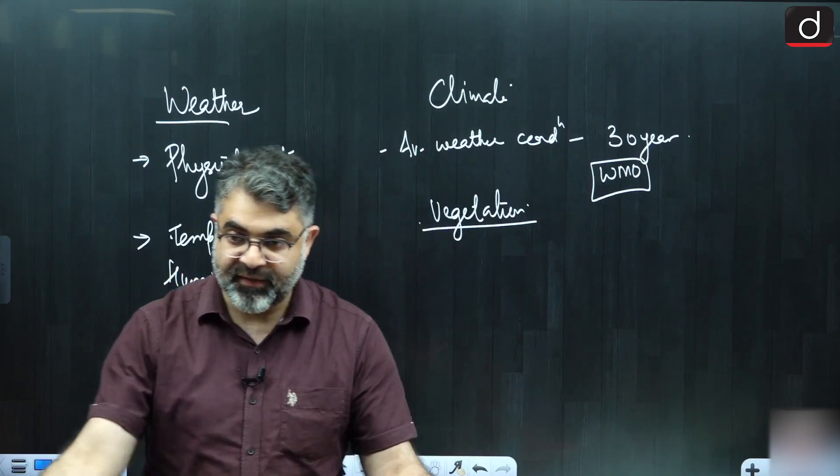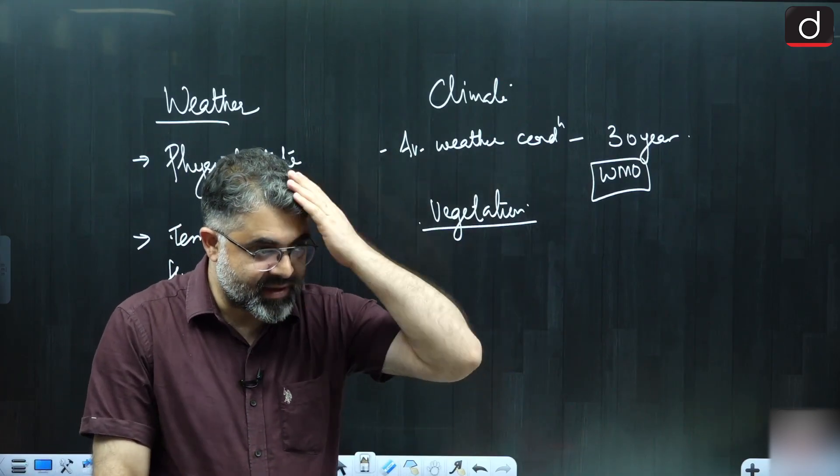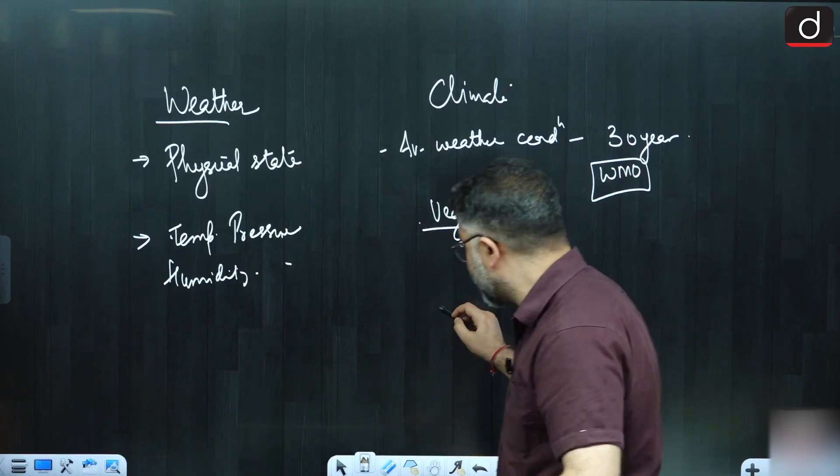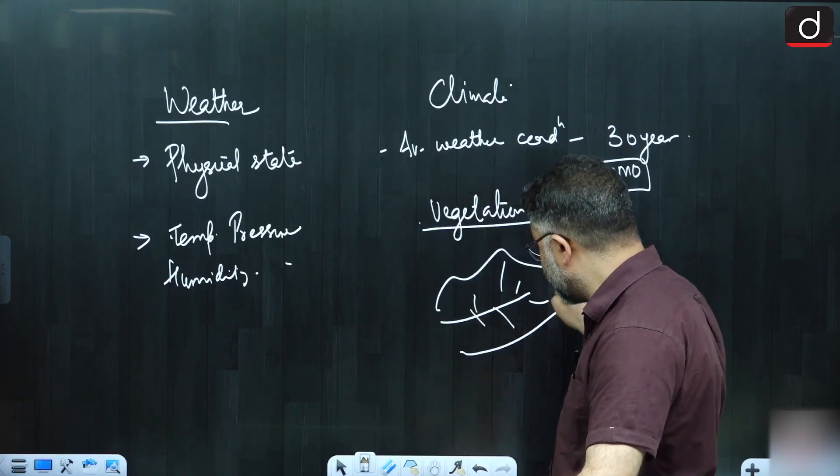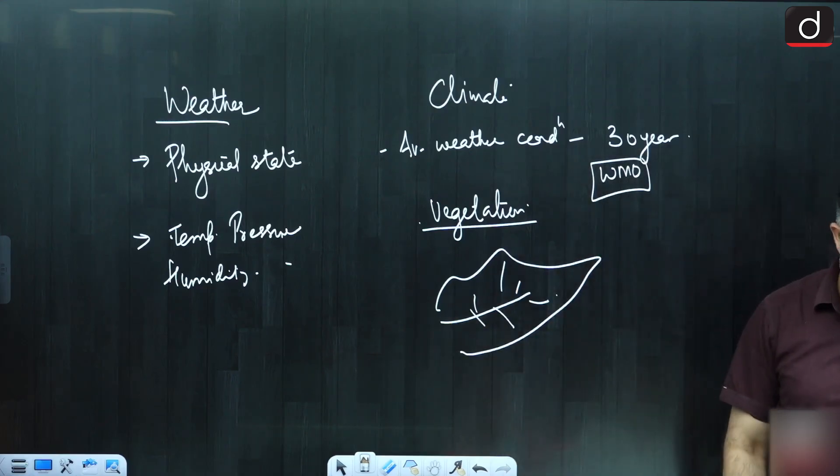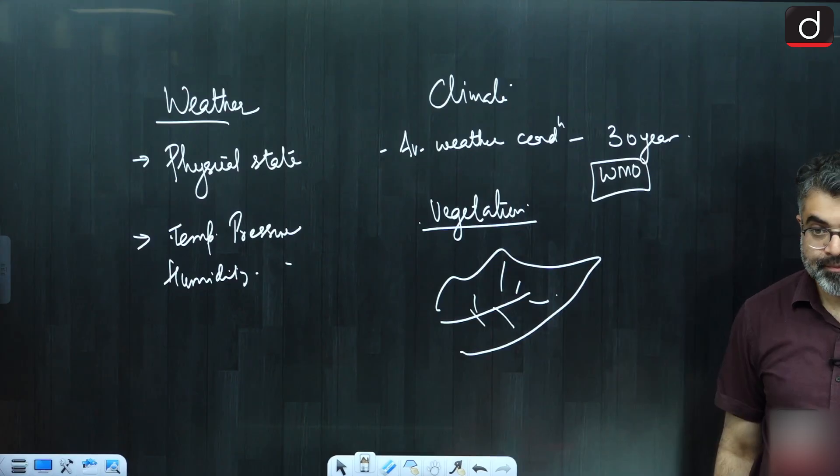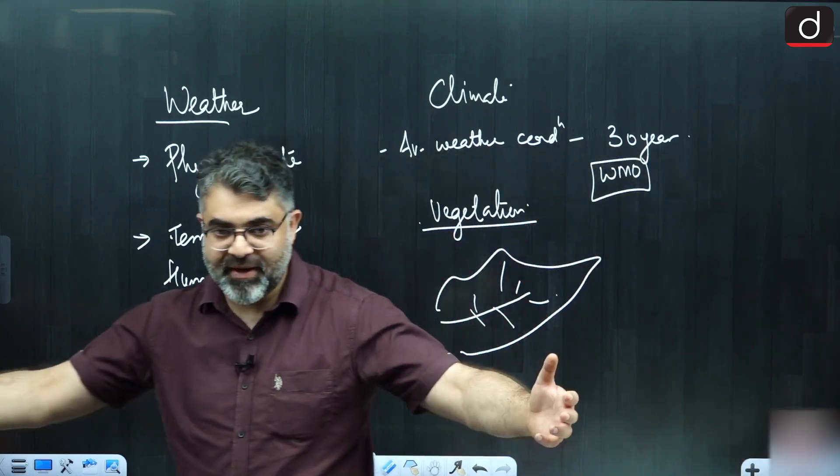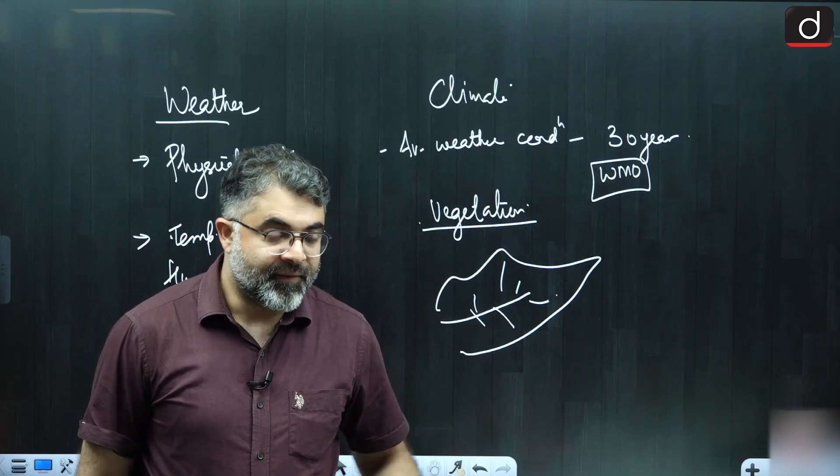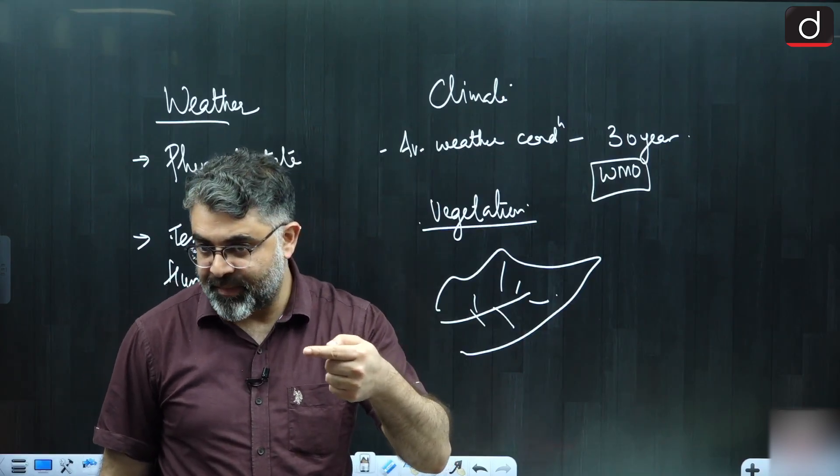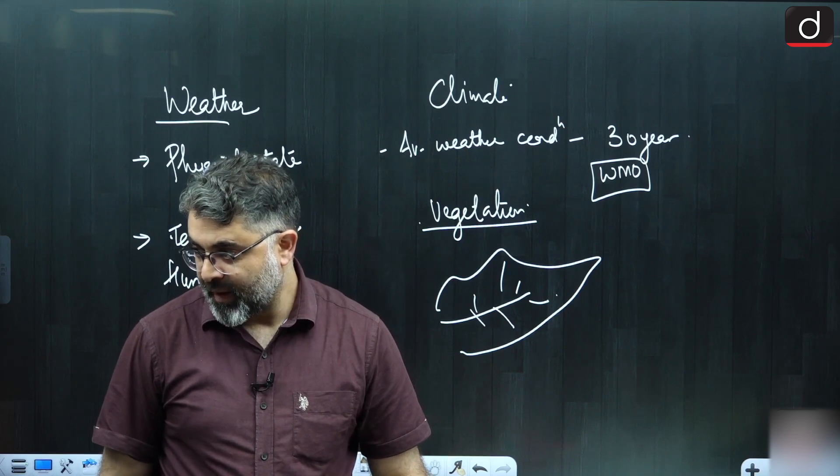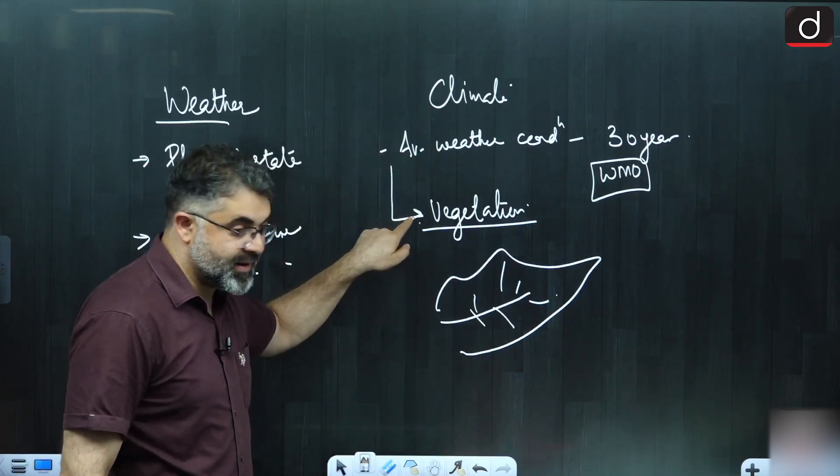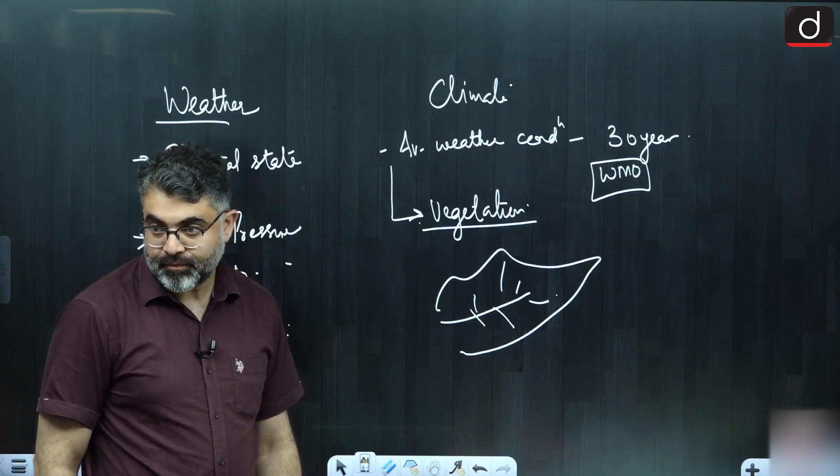We will not be waiting for 30 years to see what kind of conditions would be seen there. Just look at its natural conditions. For example, if it has broad leaves, if the region has broad leaf and has kind of evergreen conditions, we will say it has hot and humid climate. If it is needle-shaped leaves, we may consider that temperature is very low. If it is thorny vegetation, we may consider it as dry. Climate ko padhane ka pehla tariqa kya? What is the first element? Vegetation. That represents climate.